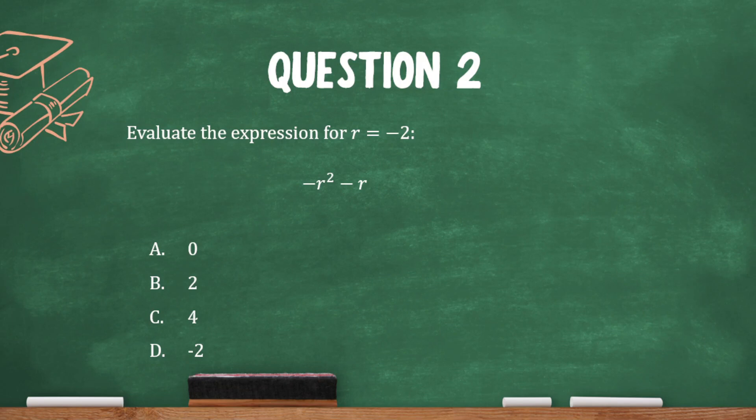Evaluate the expression for r equals negative 2. And we have negative r squared minus r. So we're substituting in negative 2 whenever there's an r. Let's carry down this first negative sign. And then where r is, let's put that negative 2 in parentheses. And then minus.